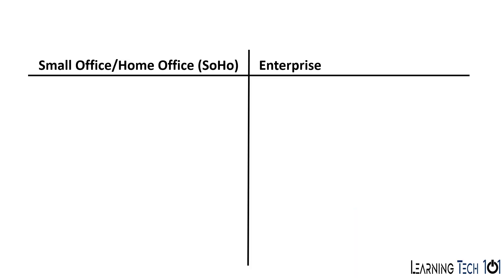Both of these are going to be common networks that you'll see today. You want to know the difference between them so you can understand the type of devices that you may see within them. SOHO Networks are small office, home office — so these are going to be your homes, your small offices — and Enterprise is what you're going to see in much larger organizations.